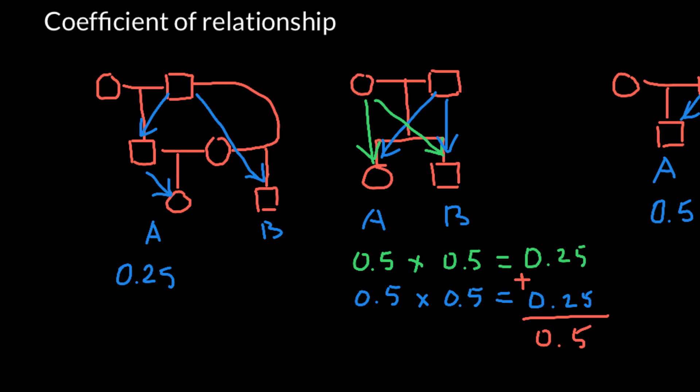Individual B would inherit 50%, or 0.5, from his father — the common ancestor. We multiply these two probabilities: 0.25 × 0.5. We can say that these two individuals would share about 0.125, or 12.5%, of the genetic makeup from their common ancestor.